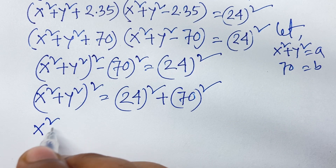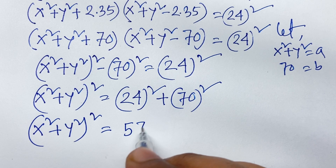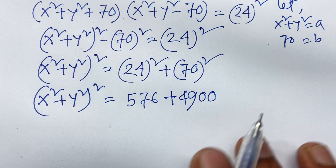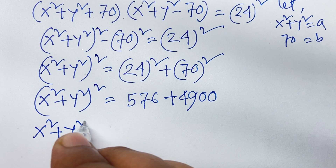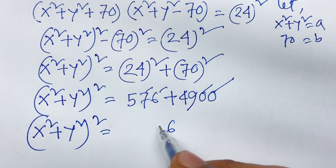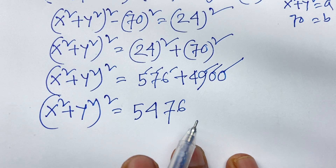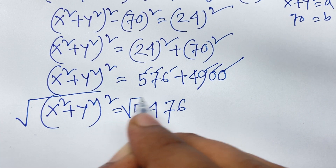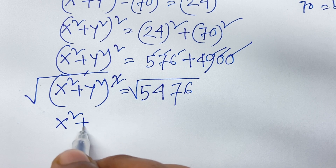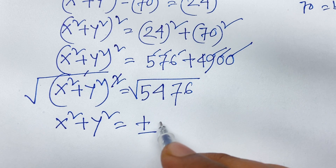Now, (x squared plus y squared) whole square equals 24 squared plus 70 squared, which is 576 plus 4900. Adding these gives 5476. Now I use the square root on both sides — the square and square root cancel — so x squared plus y squared equals plus or minus square root of 5476, which is 74.